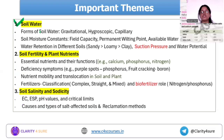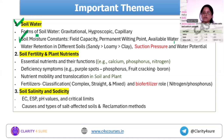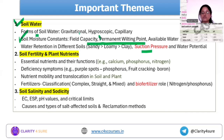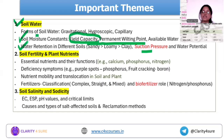Next is soil water. There are different forms of soil water: gravitational, hygroscopic, and capillary — all important. Soil moisture constants are again important: field capacity, permanent wilting point, available water, and unavailable water. The suction pressure values at these constants become important — there was a PYQ question on the suction pressure at field capacity. Also important is soil water retention in different soil types — their increasing and decreasing order.